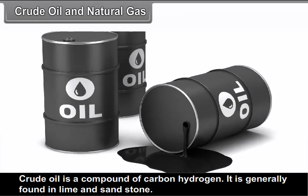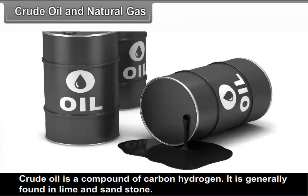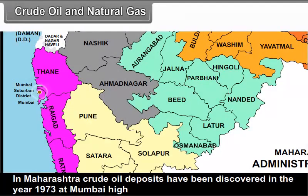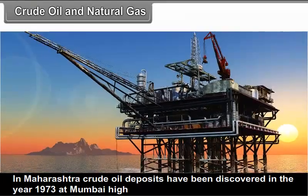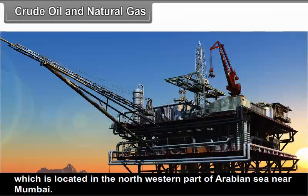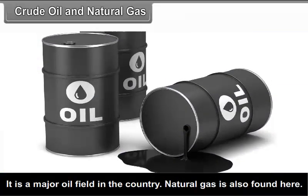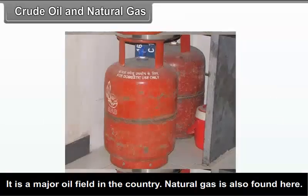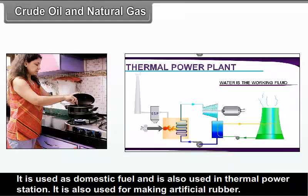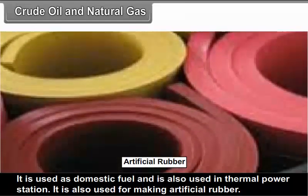Crude oil and natural gas: Crude oil is a compound of carbon and hydrogen, generally found in limestone and sandstone. In Maharashtra, crude oil deposits were discovered in 1973 at Mumbai High, located in the north-western part of the Arabian Sea near Mumbai. It is a major oil field in the country. Natural gas is also found here, and it is used as domestic fuel, in thermal power stations and for making artificial rubber.